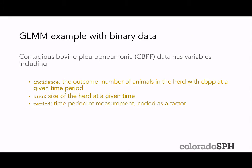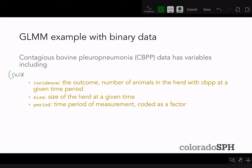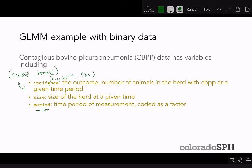The variables in this dataset include incidence, the outcome, which is the count of animals in the herd with CBPP at a given time period. Size is the size of the herd at the given time, so incidence is always smaller than size — this is like the successes/trials format for grouped data. The only covariate is period, the time period of measurement, coded as a factor variable with levels one, two, three, and four.